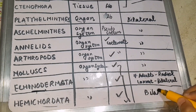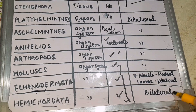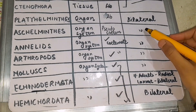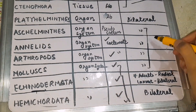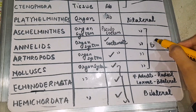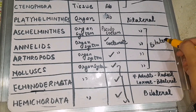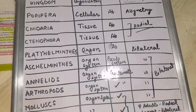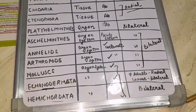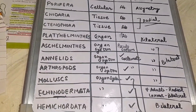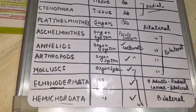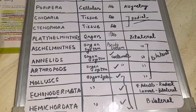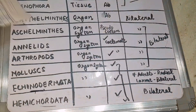Next, in Hemichordata, again bilateral type of symmetry. This marks the end of part one of the animal kingdom chapter. This table form is going to help you memorize and quickly make your notes, and you will not forget them easily. Make a chart form like this in your notebooks and revise from the NCERT also. I will soon upload part two. Hope you all like the video. Thank you.